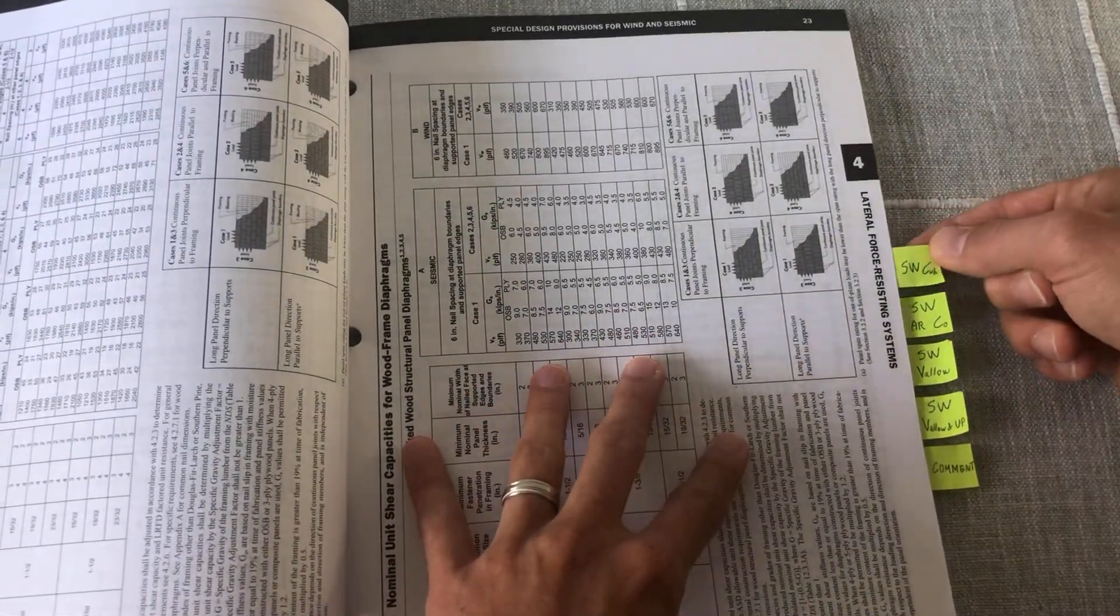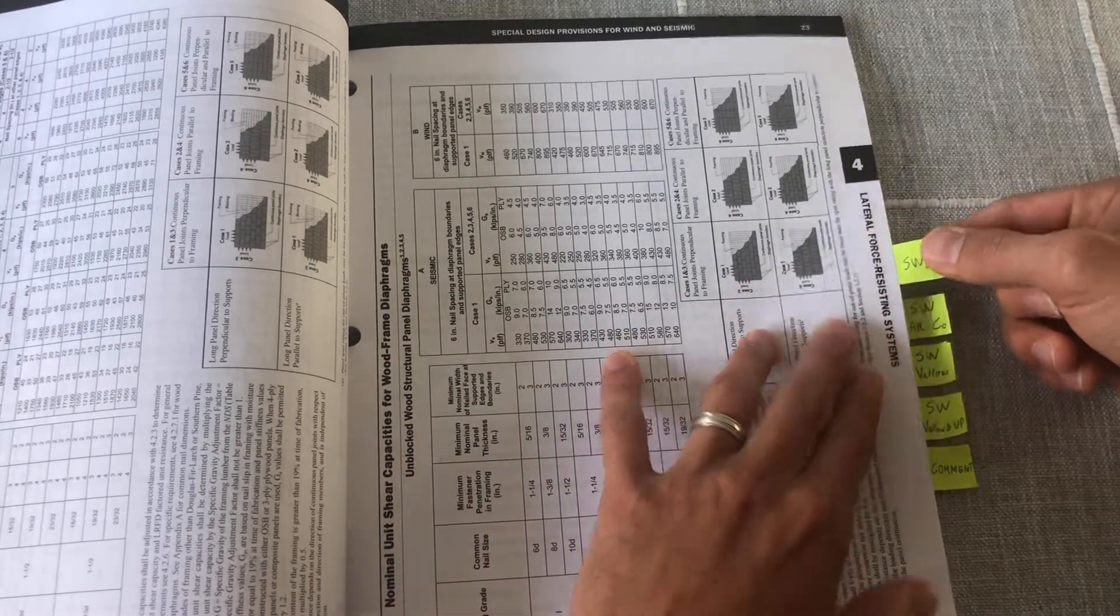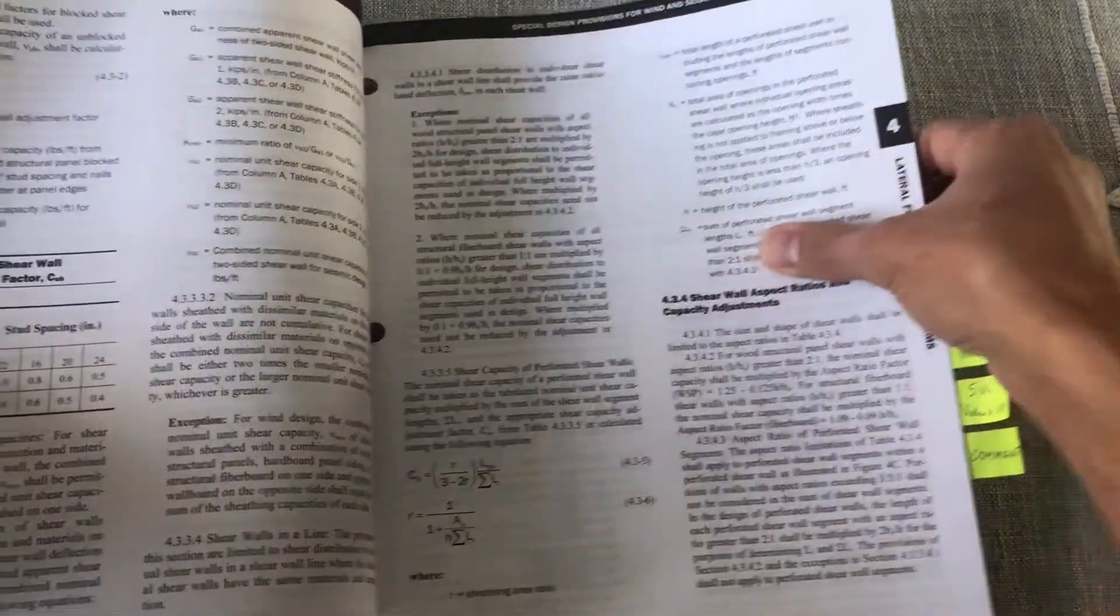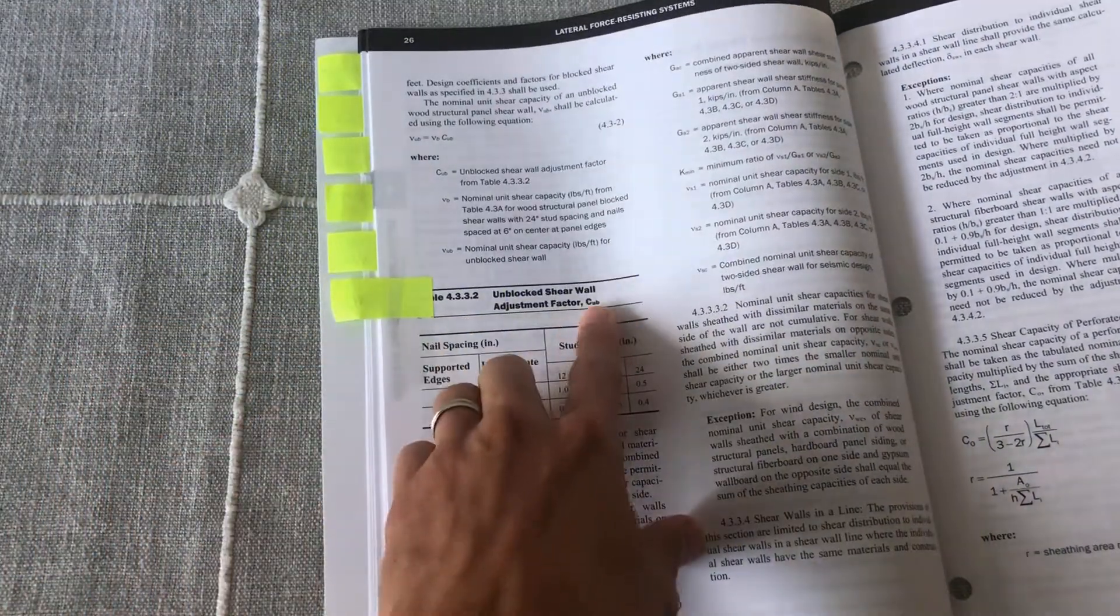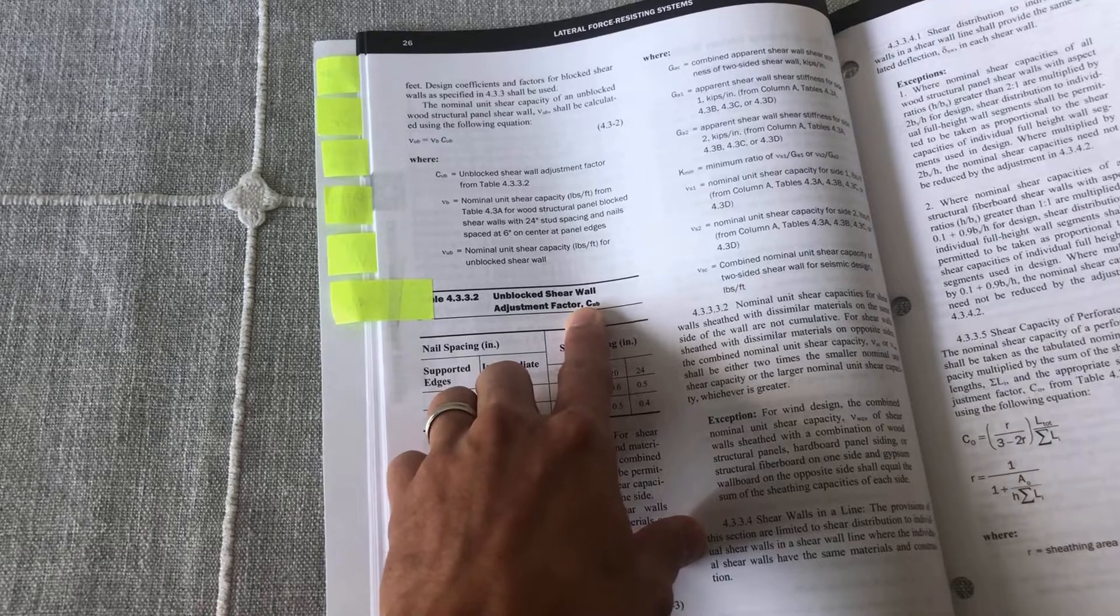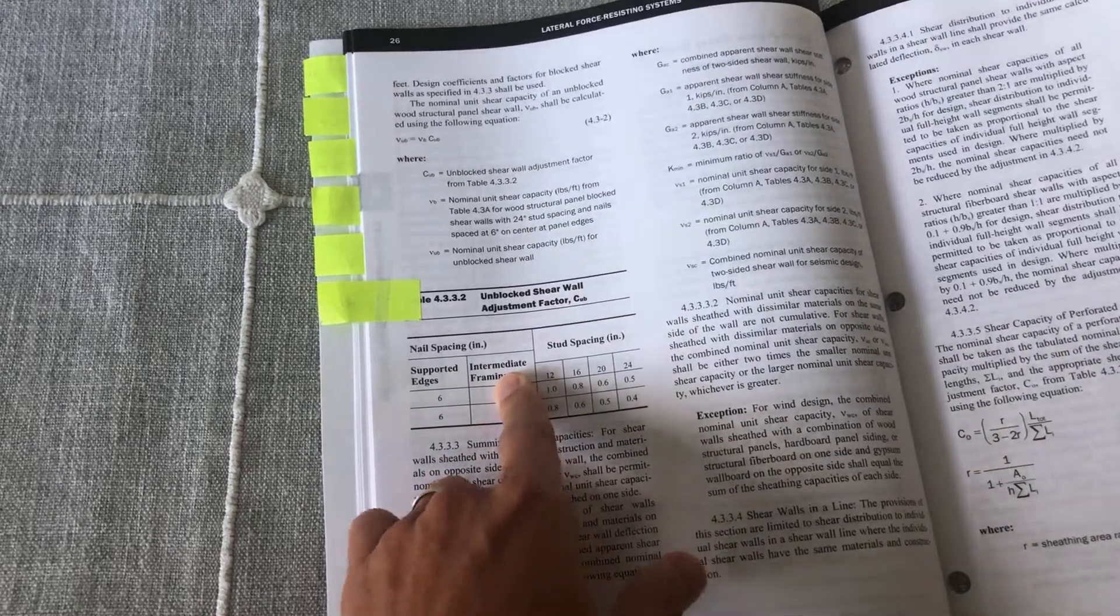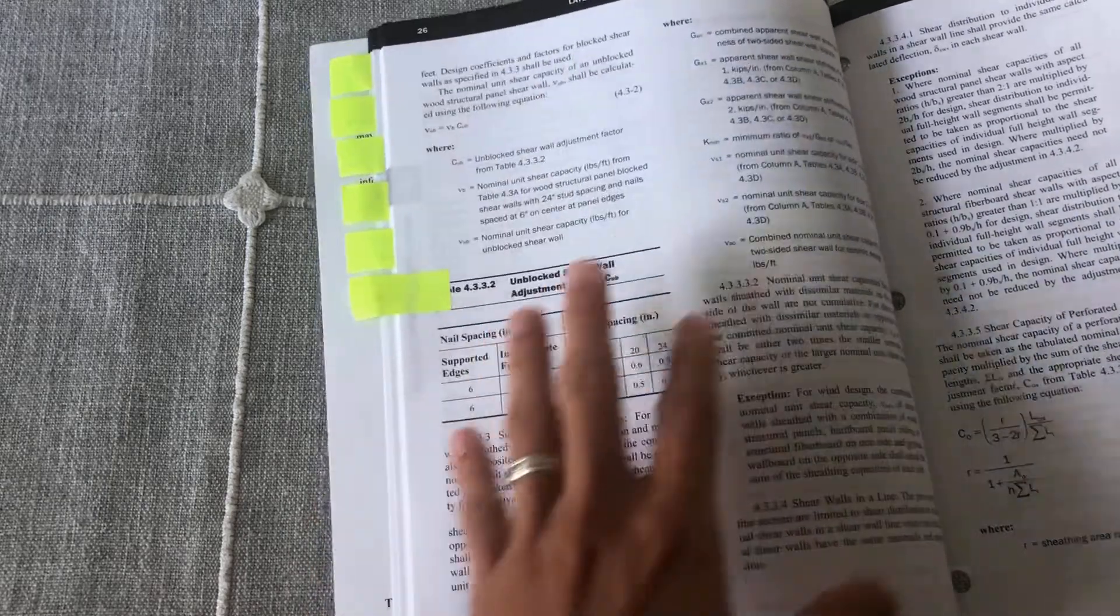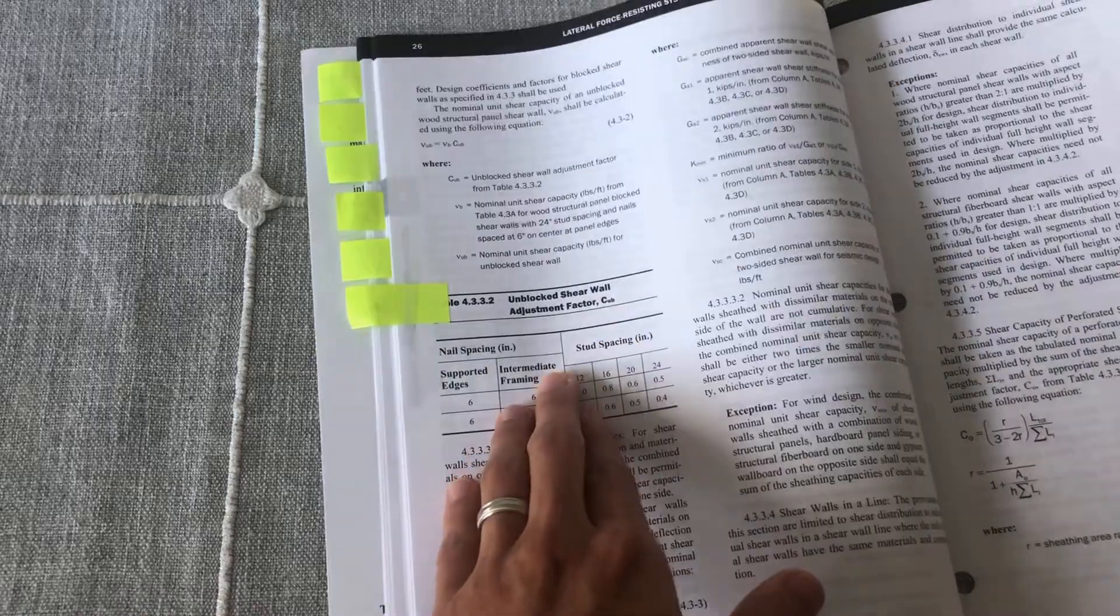And then now we're going into shear walls, and the first tab that I have here is this unblocked shear wall adjustment factor. Whenever I have a factor here on this manual, I try to tab it so that I can easily refer to it when solving a problem. And this is another one.